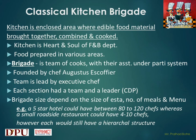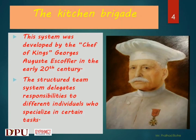A top five-star hotel kitchen could have between 80 to 150 chefs, whereas a small restaurant could have four to ten chefs. However, each would still have a hierarchical structure. Kitchen brigade is a team of cooks with their assistants, under a party system, developed by the chef of kings, George August Escoffier, in the early 20th century. The structured team system delegates responsibilities to different individuals who specialize in certain tasks, which makes work more easy.